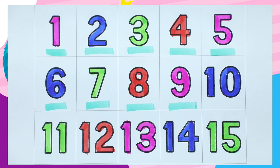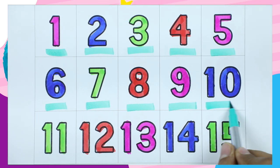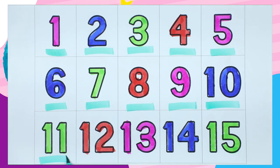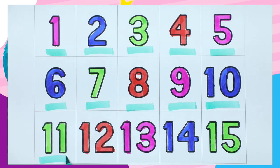One zero, ten. It's blue color. One one, eleven. Which color is this? Green. One two, twelve. It's red color.